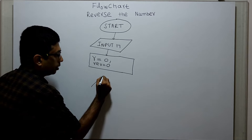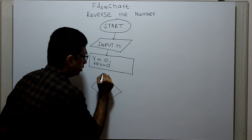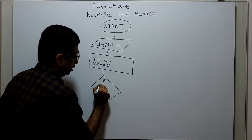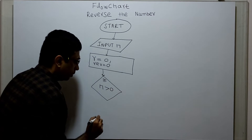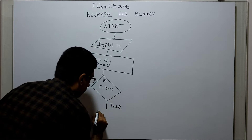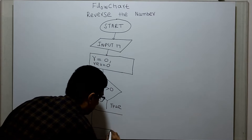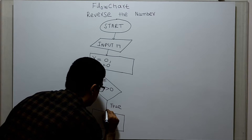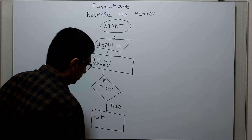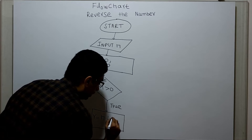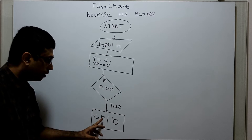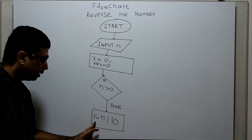Next, I am checking a relation statement: if n is greater than 0. If n greater than 0 is true, I am calculating R equal to n mod 10. It will divide the value in n by 10 and return the remainder in the variable R.